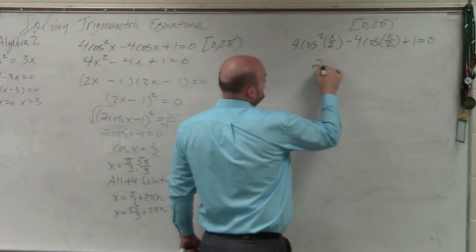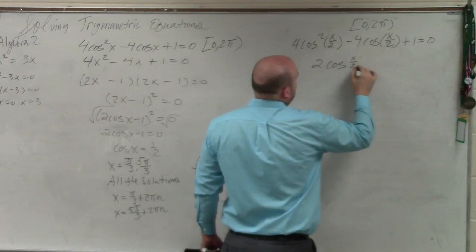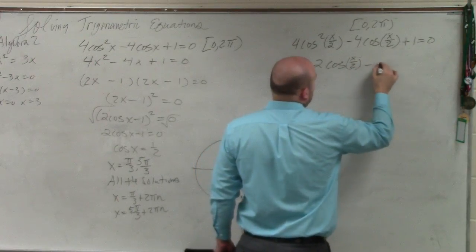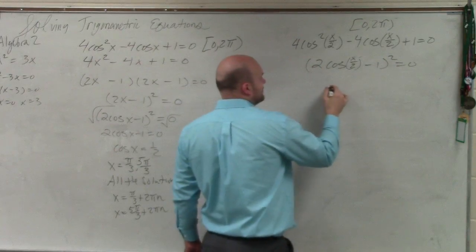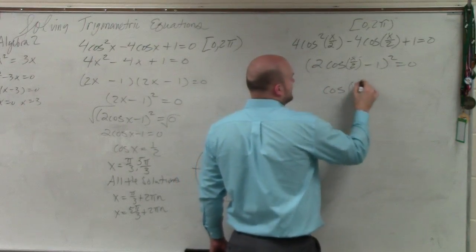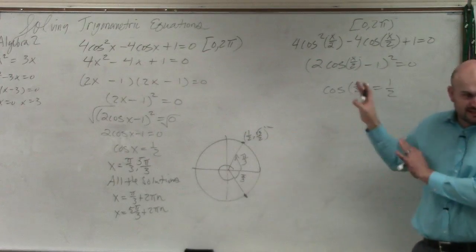And we can factor this down to 2 cosine of x over 2 minus 1 squared equals 0. And therefore, then we could solve and get cosine of x divided by 2 equals one-half. All the work is over here, exactly the same.